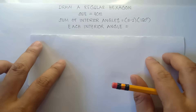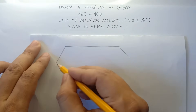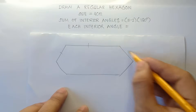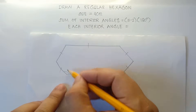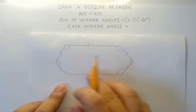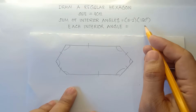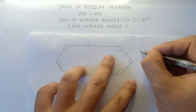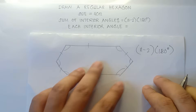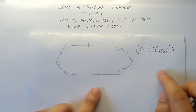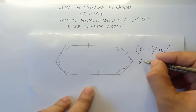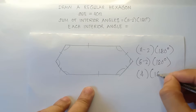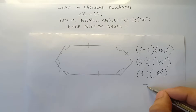We can use this formula to find the value of each interior angle — the sum of the interior angles is (n minus 2) times 180 degrees. Now n represents the number of sides. So we have 6 sides: 6 minus 2 times 180 degrees. So 6 minus 2 is 4, times 180 degrees, that would be 720 degrees.